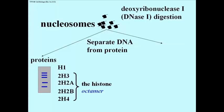These are historically derived names. But the histone octamer, around which DNA double helices actually wrap themselves, contains 2 each of all of the histones except H1. And there is 1 molecule of H1 that is associated with each nucleosome.